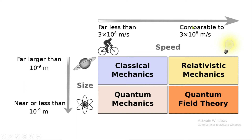In relativistic mechanics, objects have a speed comparable to 3×10⁸ m/s and a size far larger than 10⁻⁹ meters. In quantum mechanics, the object size is very close to or less than 10⁻⁹ meters. In quantum field theory, the object size is very much less than 10⁻⁹ meters and the object's speed is comparable to 3×10⁸ m/s — combining both relativistic and quantum regimes.